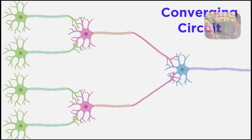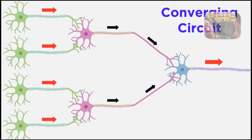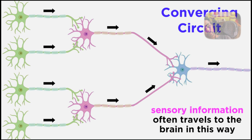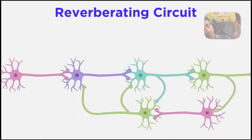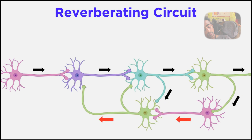We can also see a converging circuit — just the opposite — with multiple inputs and just one output, so the signal becomes concentrated. Sensory information often travels to the brain in this fashion. Next, we see a reverberating circuit, where neurons in a chain can feed back to previous neurons to form an oscillating circuit.